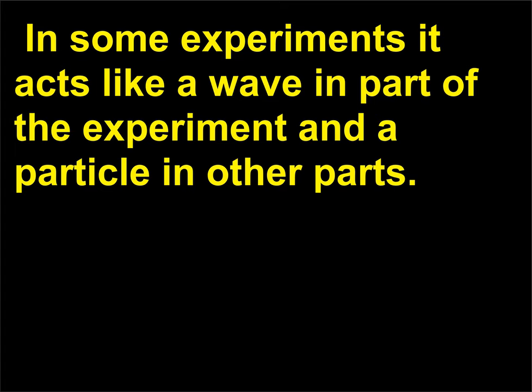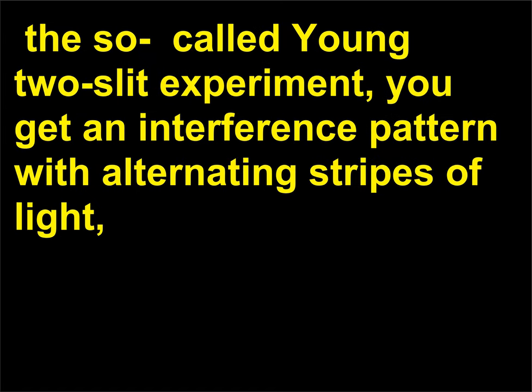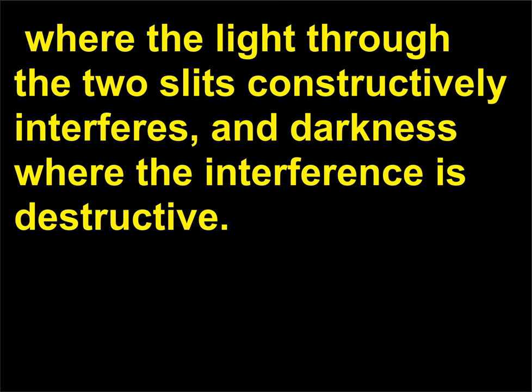In some experiments light acts like a wave in part of the experiment and a particle in other parts. For example, if you put a beam of light through a pair of narrow, closely-spaced slits — the so-called Young two-slit experiment — you get an interference pattern with alternating stripes of light where the light through the two slits constructively interferes, and darkness where the interference is destructive.